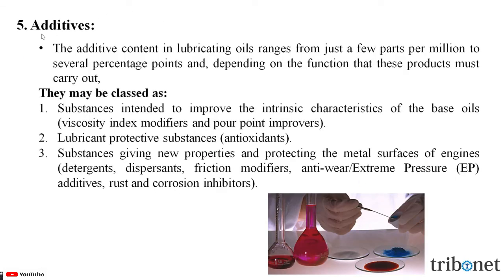Finally, let us see what are additives in lubricants and what are their types. The additive content in lubricating oil ranges from just a few parts per million to several percentage points, depending on the function these products must carry out. They may be classified as: substances intended to improve the intrinsic properties of the base oils, such as viscosity index modifiers and pour point improvers; lubricant protective substances like antioxidants; and substances giving new properties and protecting the metal surfaces of engines, such as detergents, dispersants, friction modifiers, anti-wear, extreme pressure additives, rust and corrosion inhibitors.